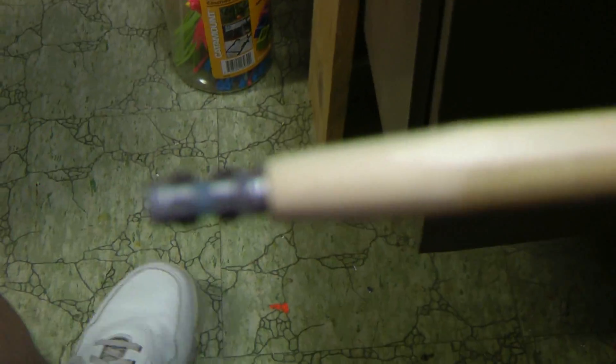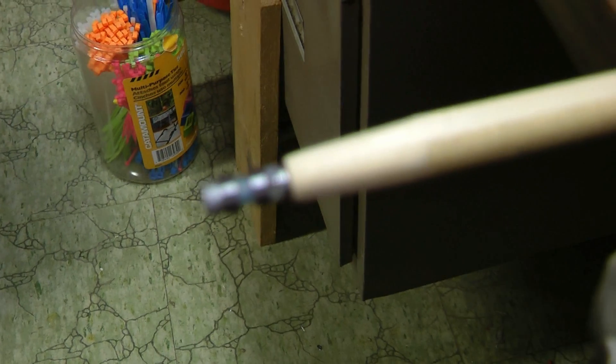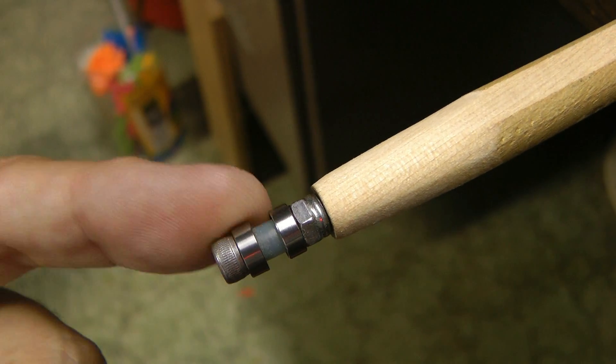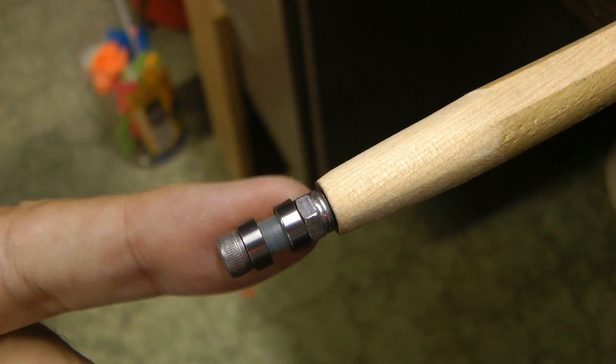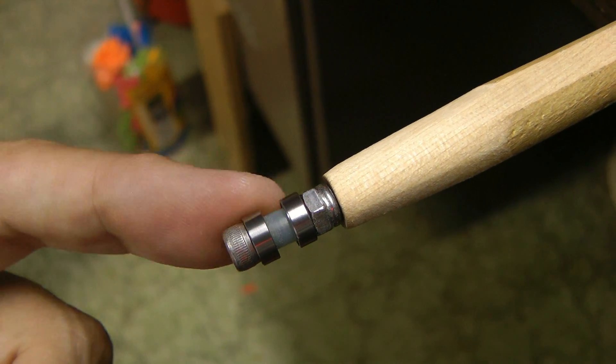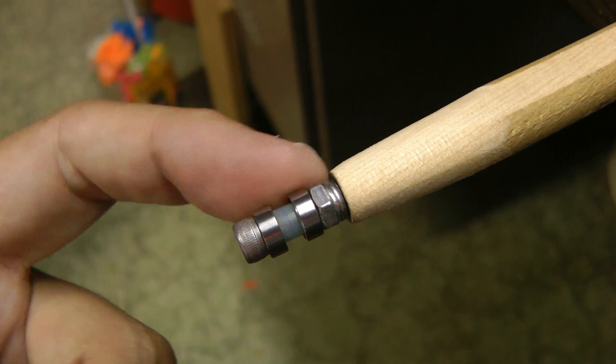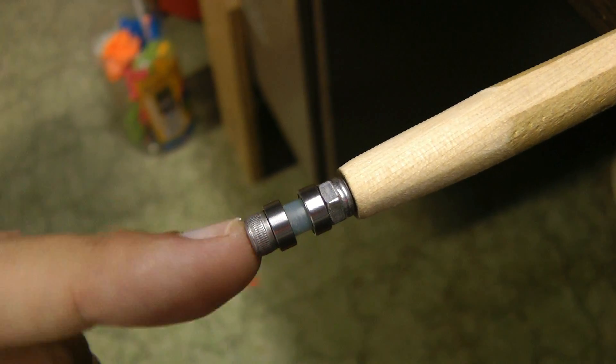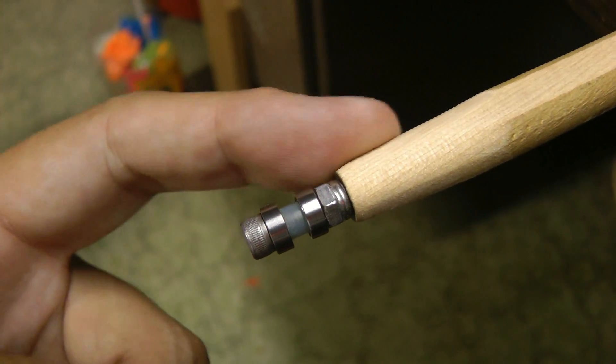So all it is is two bearings with a spacer. The bearings here are for like a T-Rex 500. You use an 8mm outside diameter bearing. The inside diameter does not matter. In this case, I had 4s, so I used a 4mm bolt to mount this to the dowel.